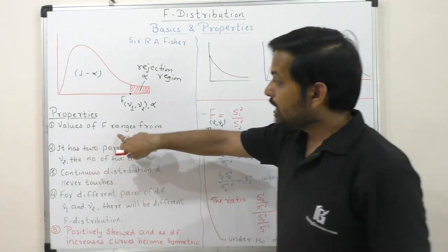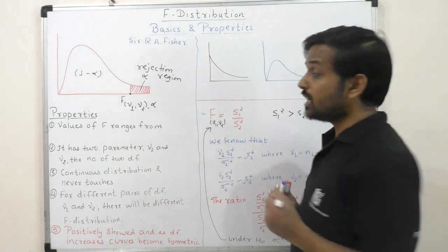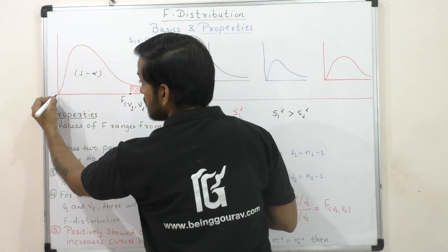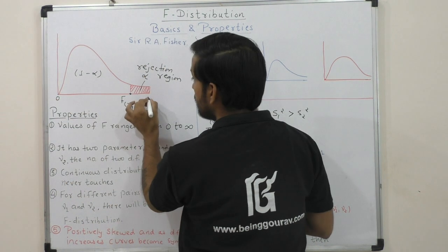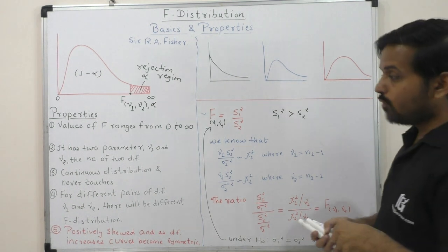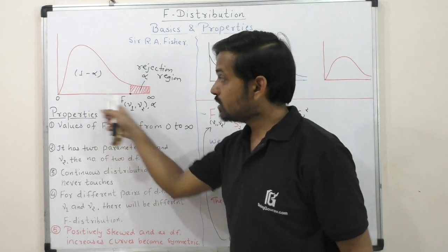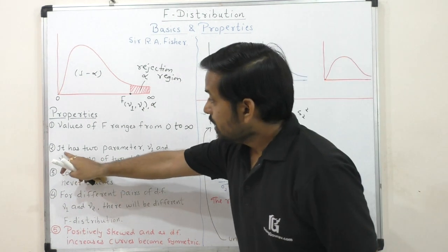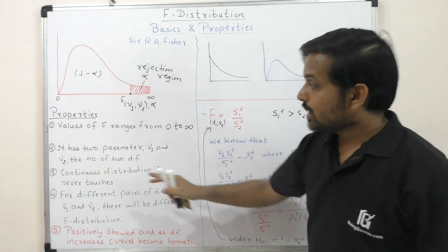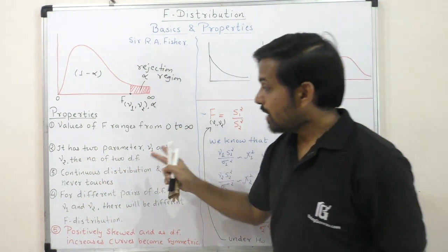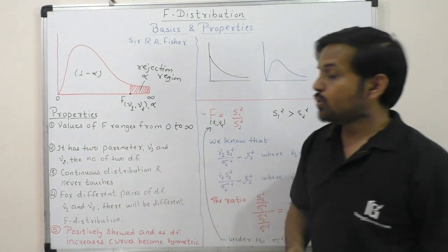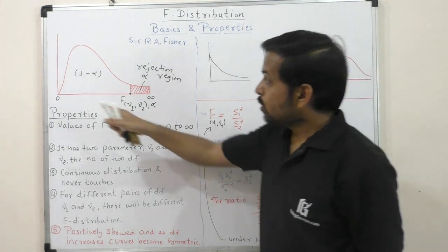The first property is that the value of F ranges from 0 to infinity. The second property is that in this F distribution there are two parameters: ν1 and ν2, meaning number of degrees of freedom.